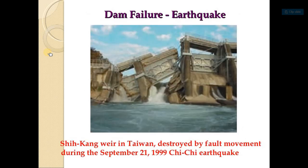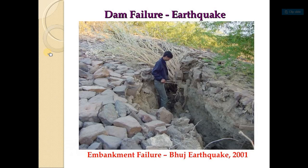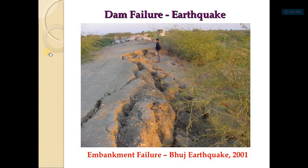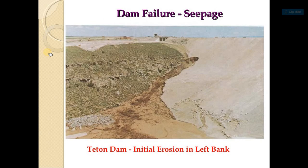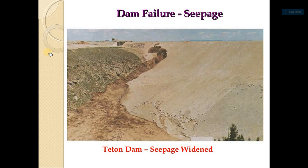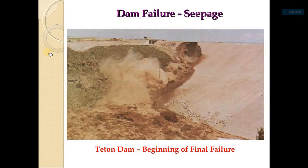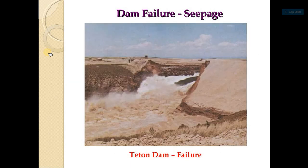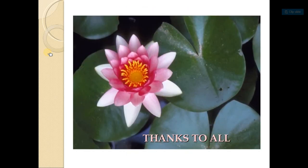Some dam failure cases: one example occurred on September 21, 1999 in Taiwan — failure of a dam due to earthquake. Another example shows embankment failure due to an earthquake. The Teton Dam sequence shows: initial erosion in the left bank, seepage widening, the beginning of final failure, and the actual failure of the Teton Dam.